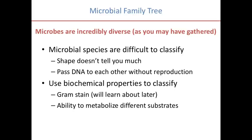Since shape often can't tell you a lot about microorganisms, people use biochemical properties to classify them. One is the gram stain — you can stain bacteria and some cells will take up the purple stain while others will not. Especially before the use of DNA to classify microorganisms, this was one of the very first steps in enabling people to classify microbes. Organisms were often called gram-positive or gram-negative. In your 315 lab, you'll learn about gram staining and perform many gram stains.